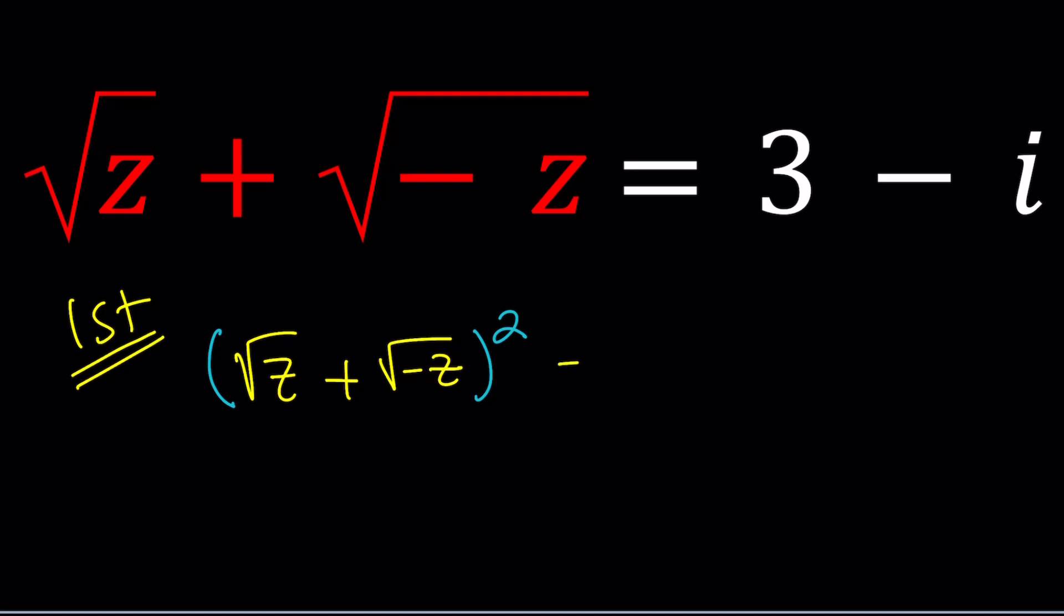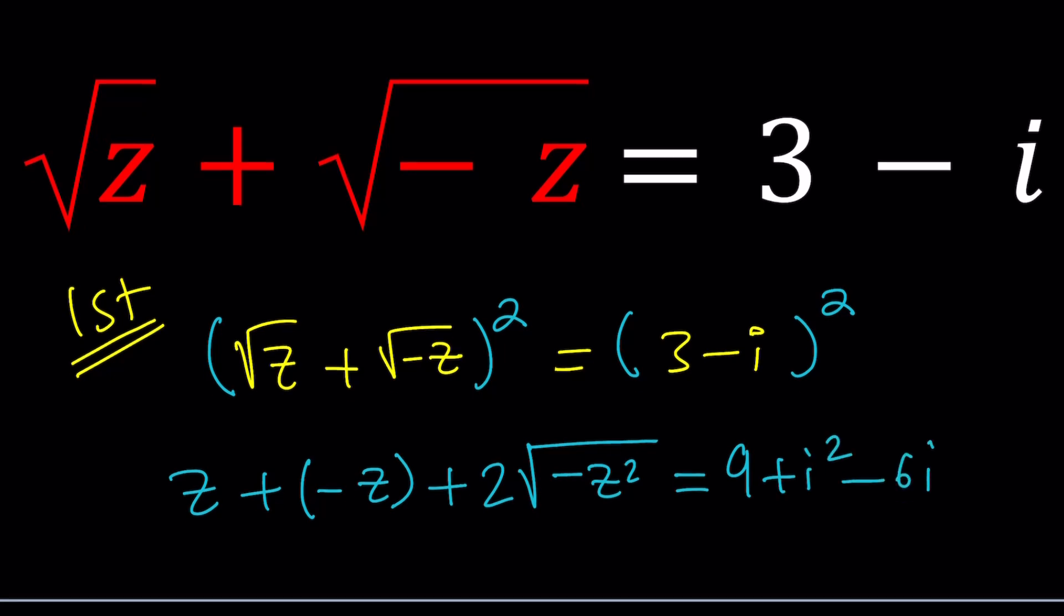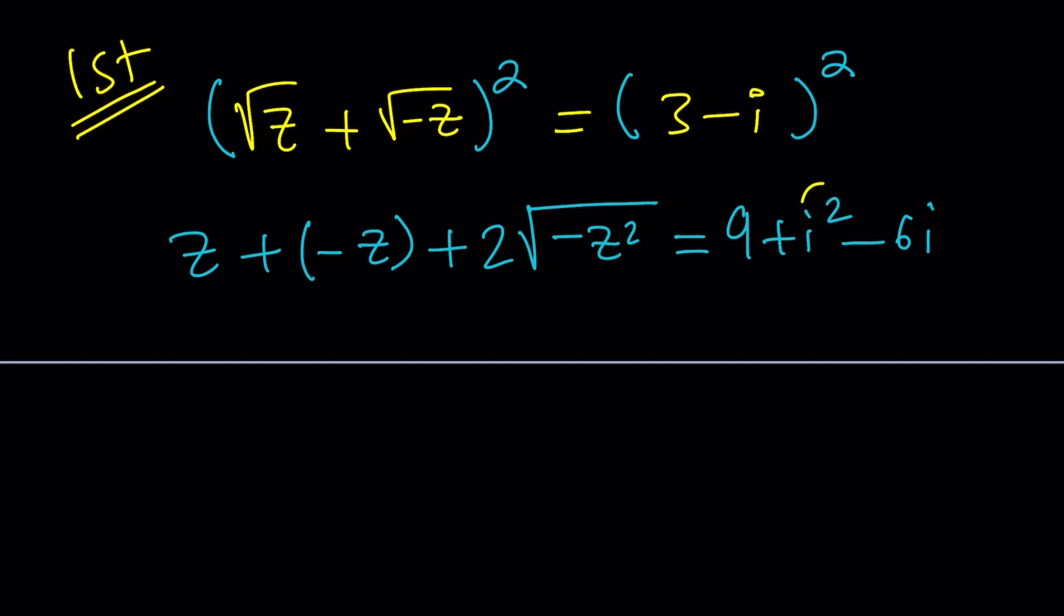When you square both sides, something interesting happens. You have a plus b quantity squared. I write a squared, b squared, and then 2ab. The 2ab is going to give us two times the radical negative z squared. And the right-hand side is 9 plus i squared minus 6i. i squared is negative 1. You should know that - you can forget everything about complex numbers, but don't forget this. 9 minus 1 is 8. So that's 8 minus 6i. These two cancel out nicely.